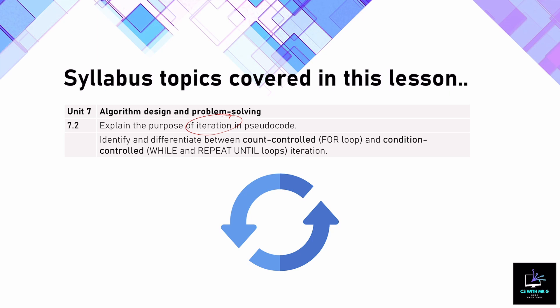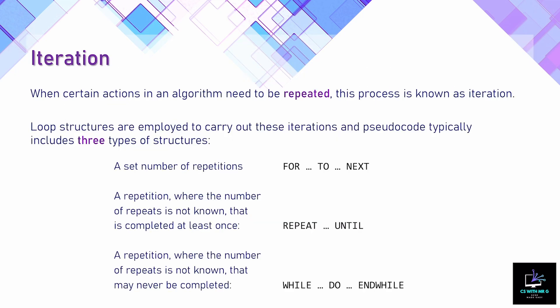We also need to differentiate the different types of loops: count controlled and condition controlled. Count controlled is what we call a for loop, and condition controlled is what we call a while loop and a repeat until loop. We'll go into detail on all of these different loops and make sure we understand when to use each one given a certain scenario.